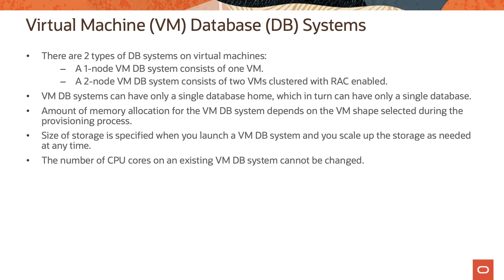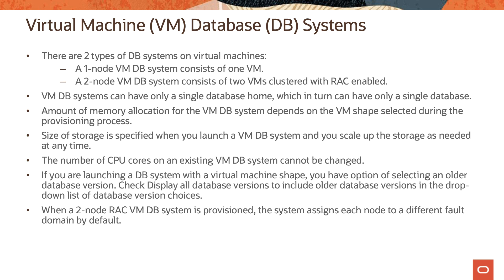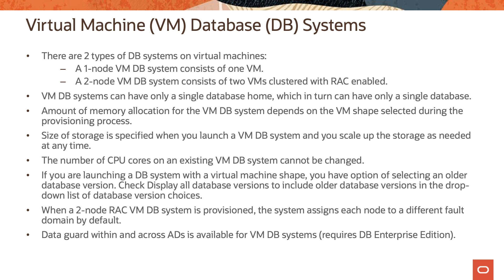Note that the number of CPU cores on an existing VMDB system cannot be changed at this time. If you are launching a DB system with a virtual machine shape, you have the option of selecting an older database version. You have to check 'display all database versions' to include older versions in the drop-down list during the provisioning process. When a two-node RAC VMDB system is provisioned, the system assigns each node to a different fault domain by default. Data Guard within and across availability domains is available for VMDB systems, and this requires database enterprise edition.